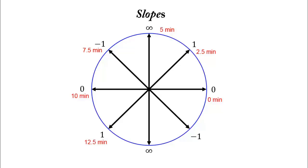At 12.5, the slope is 1. 15 minutes, the slope is infinite, or not defined again. At 17.5 minutes, it's negative 1. And after 20 minutes, or one rotation, it's back to 0.